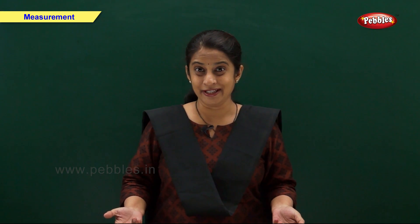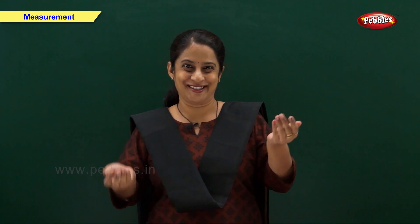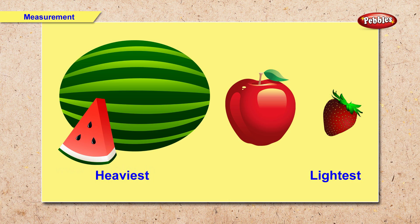Now let us see heaviest and lightest. Here we have a watermelon, apple and strawberry. Which fruit is the heaviest and which fruit is the lightest? Right. Watermelon is the heaviest. Strawberry is the lightest.